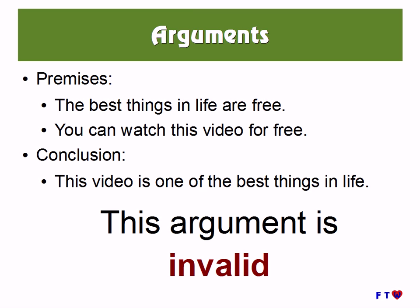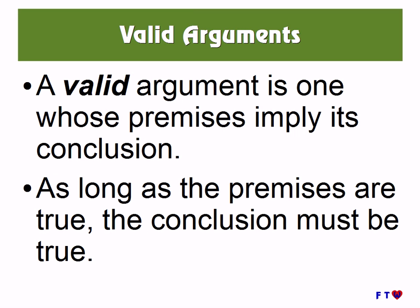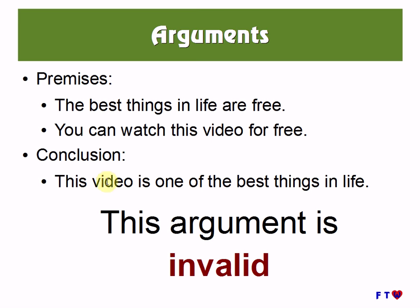An invalid argument is one which is not valid. A valid argument is one whose premises imply its conclusion — as long as the premises are true, the conclusion must be true. Let's assume that these premises are true: the best things in life are free, and you can watch this video for free. Even if that's true, it does not imply that this video is one of the best things in life.